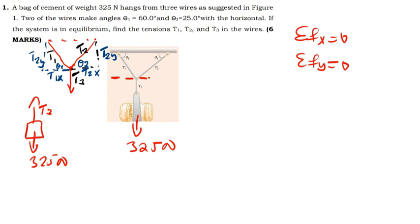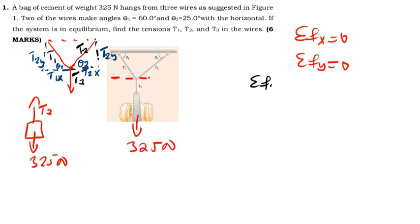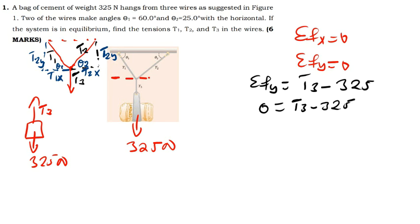T3 is easy to find. Using just the bag, I'll say the summation of forces in the y-direction: T3 pointing upward is positive, minus the weight force which is 325 Newtons, equals zero. So T3 minus 325 equals zero, meaning T3 equals 325 Newtons.